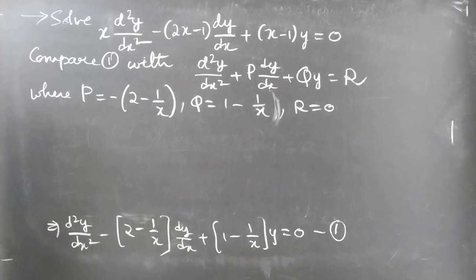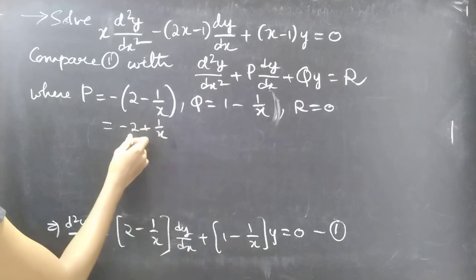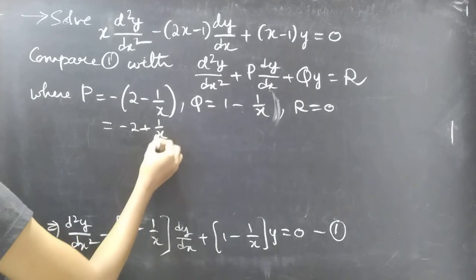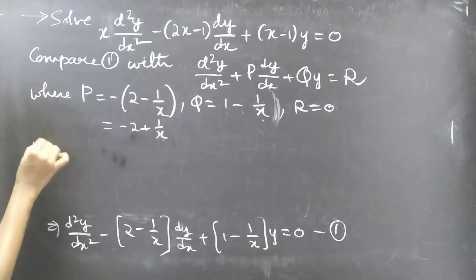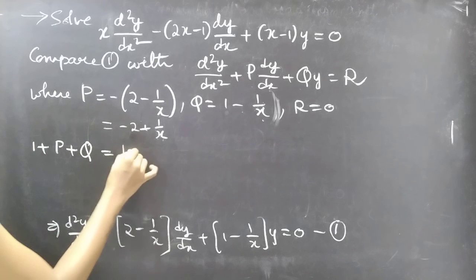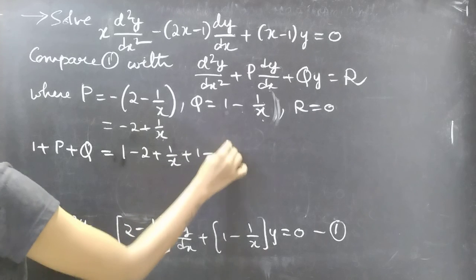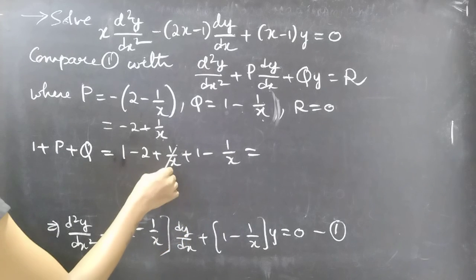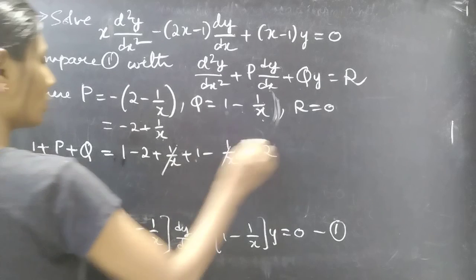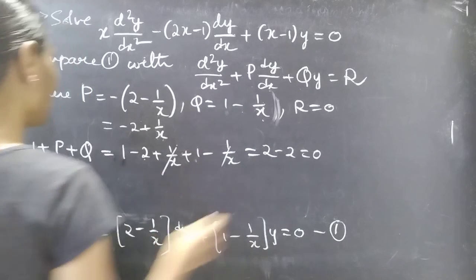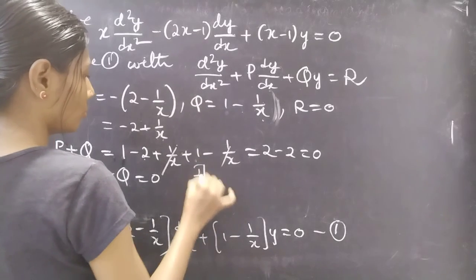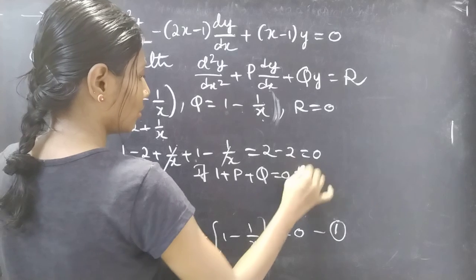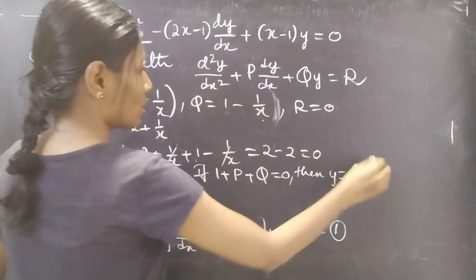Now we need to find one part of the complementary function. Observe P and Q: P = −2 + 1/x and Q = 1 − 1/x. Compute 1 + P + Q = 1 + (−2 + 1/x) + (1 − 1/x) = 1 − 2 + 1 + 1/x − 1/x = 0. Since 1 + P + Q = 0, we know that y = eˣ is one part of the complementary function.